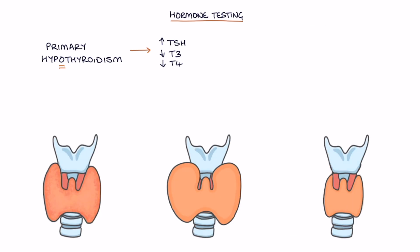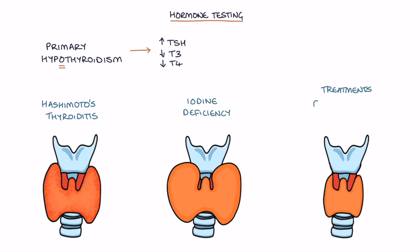The top causes of primary hypothyroidism are Hashimoto's thyroiditis, iodine deficiency, and treatments for hyperthyroidism such as carbimazole or radioactive iodine.